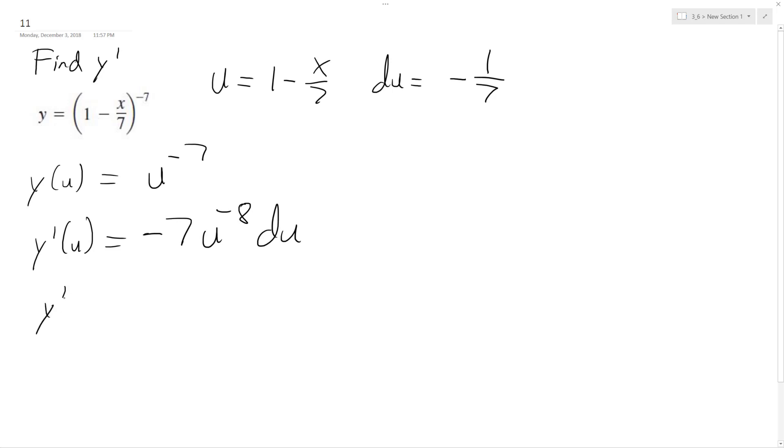Y prime of x, sub everything back in. Negative 7, let's see here, quantity 1 minus x over 7 raised to the negative 8.